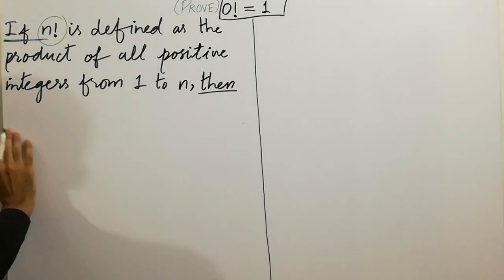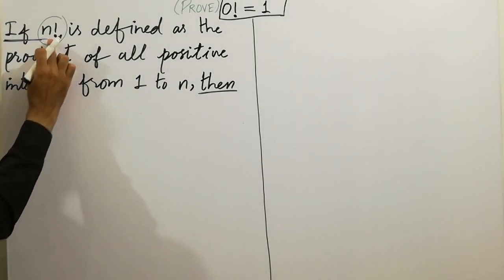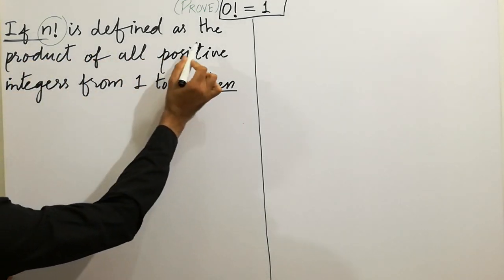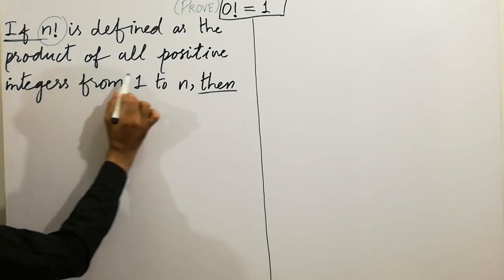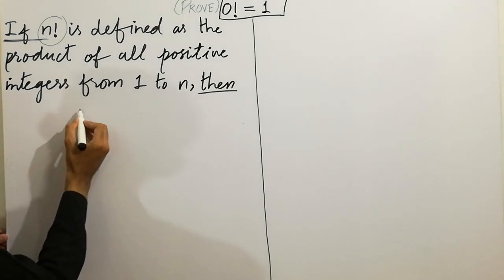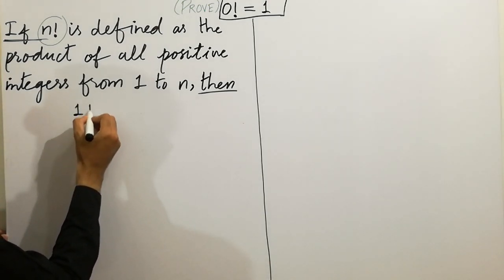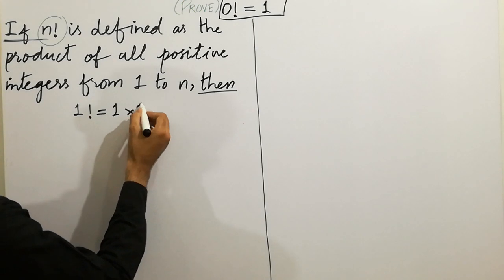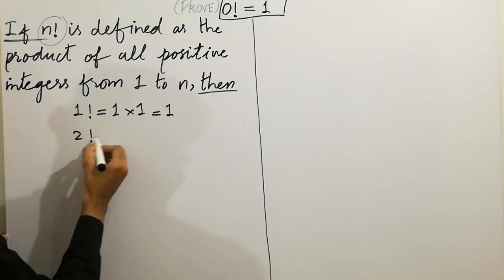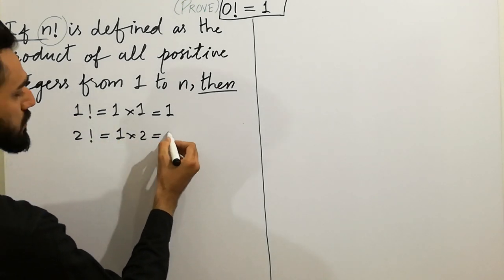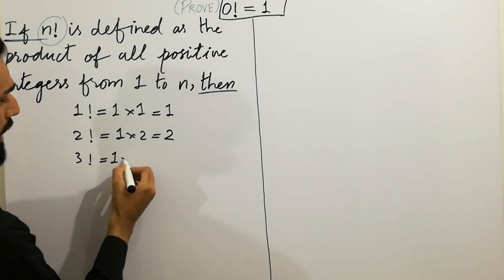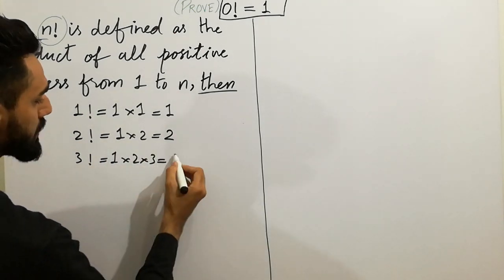First of all, I discuss the definition of n-factorial. What is n-factorial? If n-factorial is defined as the product of all positive integers from 1 to n, then we can state that 1-factorial is equal to 1, which equals 1. 2-factorial is equal to 1 cross 2, which equals 2. 3-factorial will be 1 cross 2 cross 3, which equals 6.